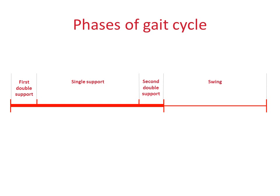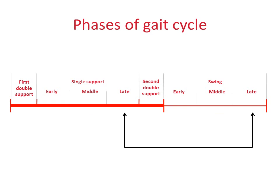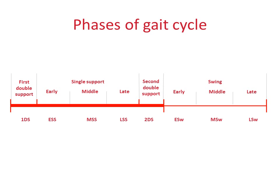Single support and swing are quite long phases which require further subdivision. A variety of methods have been explored for doing this, but none of them lead to sensible definitions that hold for normal walking and for walking with pathology of different kinds. Given this, I suggest we simply divide these into three phases of equal duration. We'll call these early, middle, and late, to distinguish them from earlier schemes that use terms such as initial and terminal. Note that early single support on one side corresponds to early swing on the other, middle single support to middle swing, and late single support to late swing. I suggest three-letter abbreviations for referring to these succinctly.